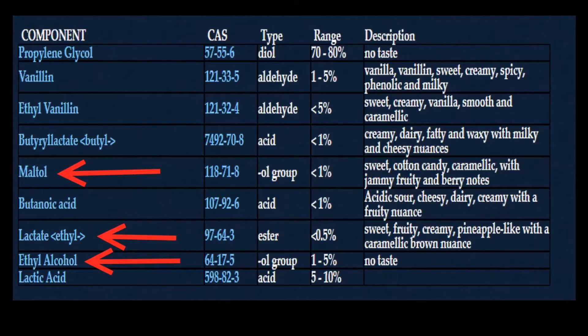And then finishing, there are maltol and ethyl lactate, which is a sweetener and smoothener. And after those, last there is some ethyl alcohol, which is used as a flavor emulsifier to help blend all these different flavors and aromas together.